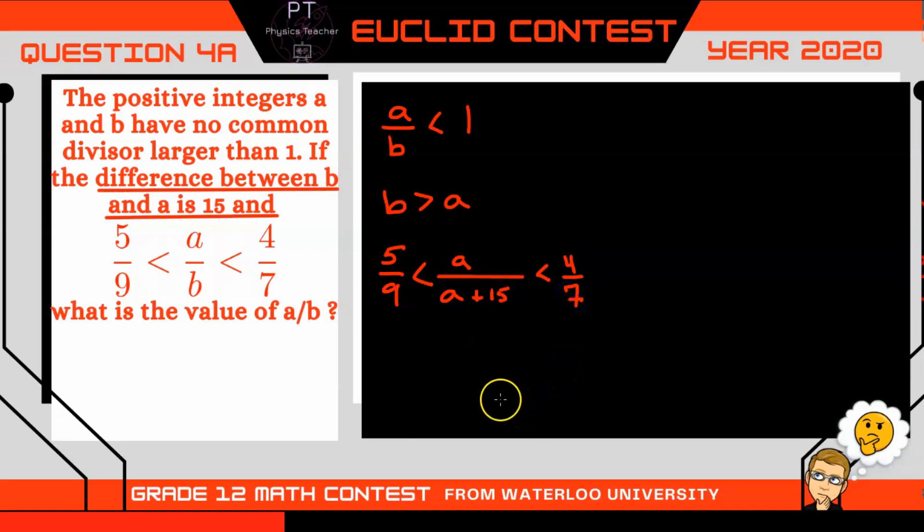Alright, so let's analyze this inequality in two ways. First, this portion of the inequality. I'm going to cross multiply, so that'll give us 5 times A plus 15 is going to be less than 9A. Alright, so let's distribute the 5. So I've got 5A plus 75 is less than 9A.